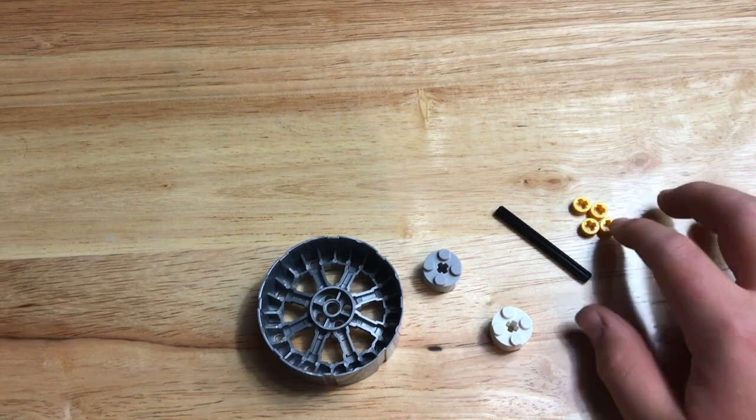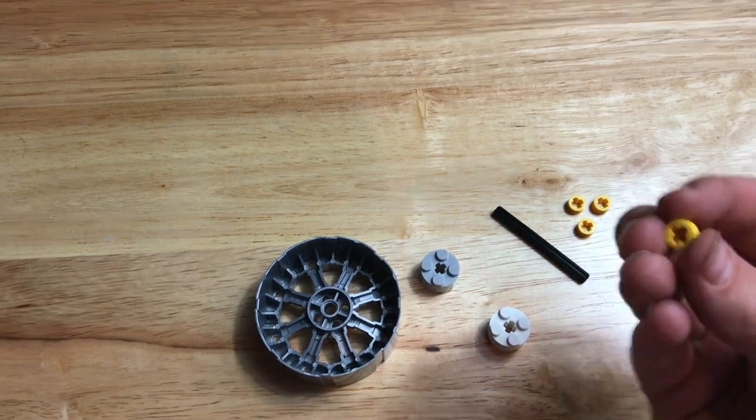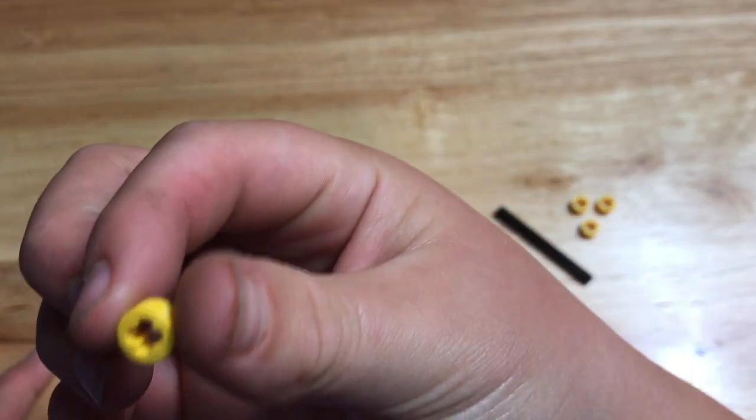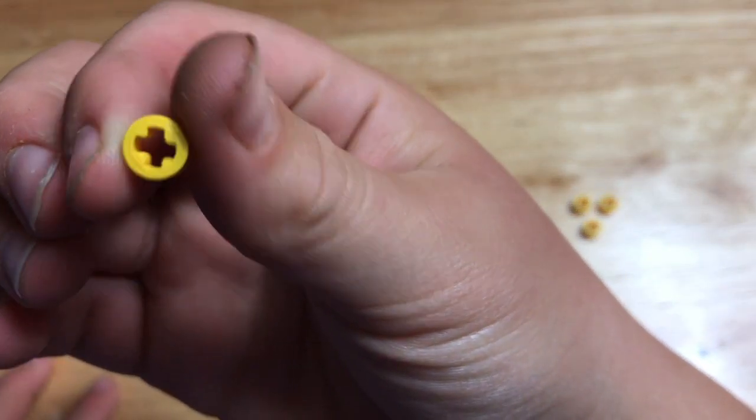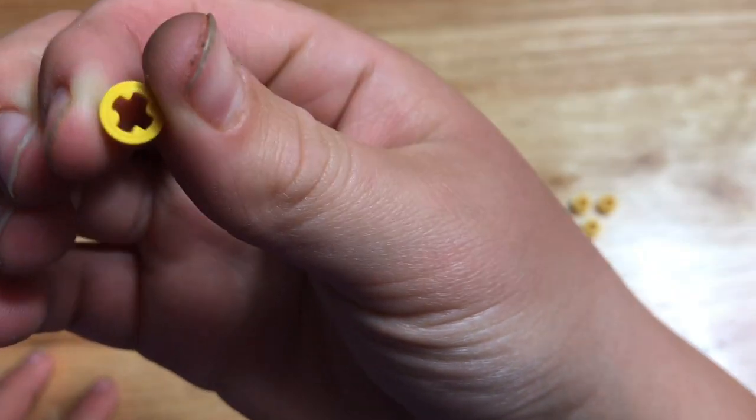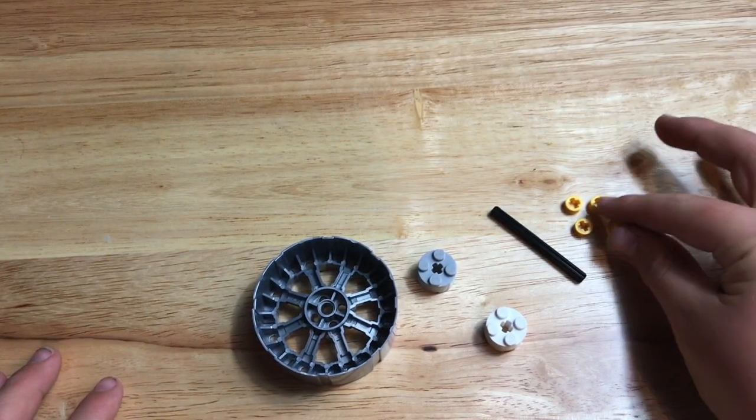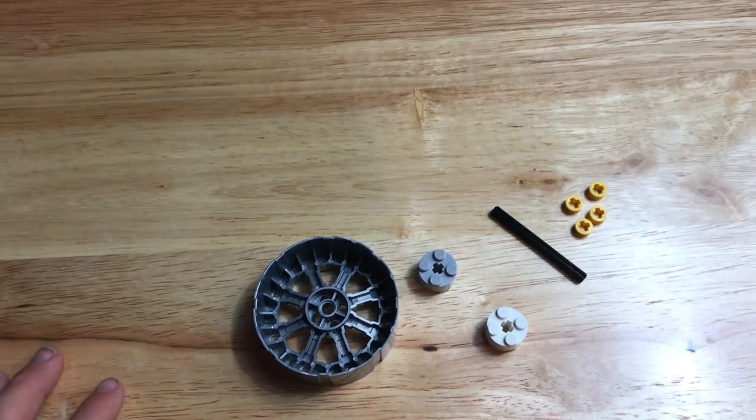Okay, what you're going to need is four of these little things that have a cross in the middle. I don't know what you call them, but you're going to need four of those. They can be any color, doesn't really matter.